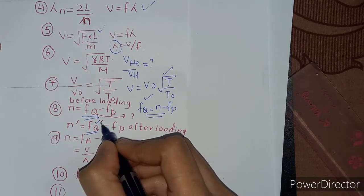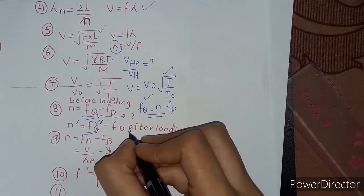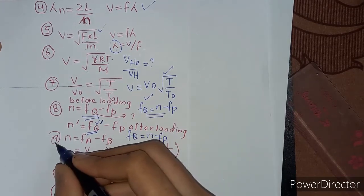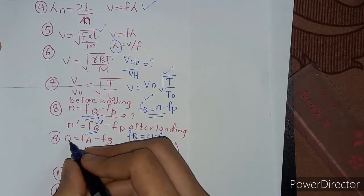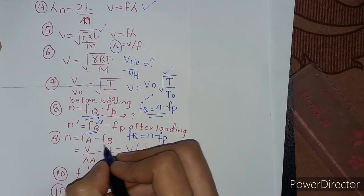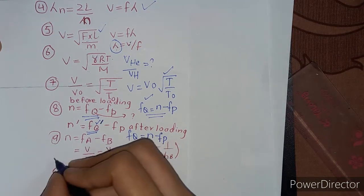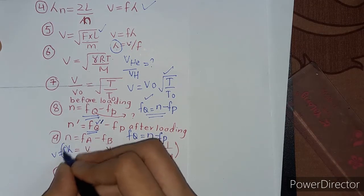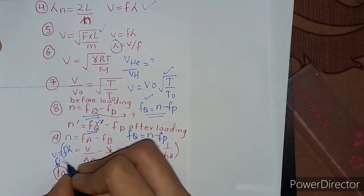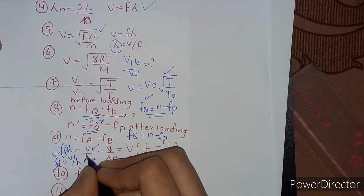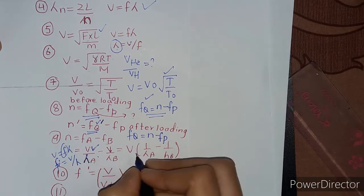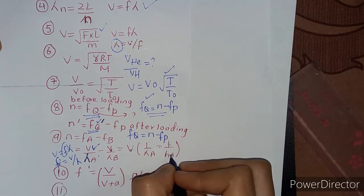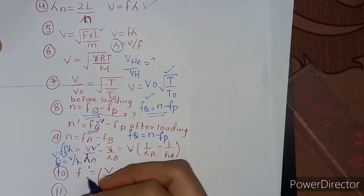In the second case we find the new frequency of Q. Rearranging the equation gives n minus f_P. In the ninth numerical we find n equal to f_A minus f_B. Using v equal to f cross lambda, frequency equals v divided by lambda. Lambda remains the same; taking lambda_A and lambda_B common, we get one over lambda_A minus one over lambda_B.